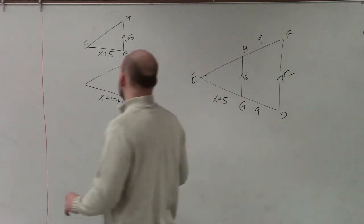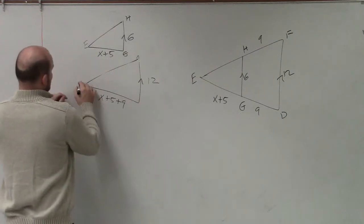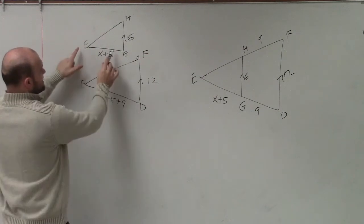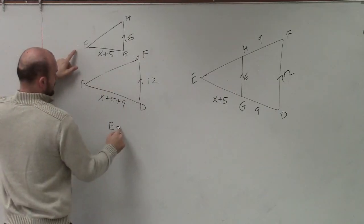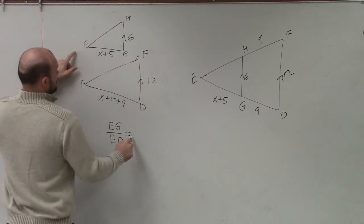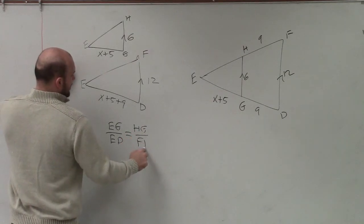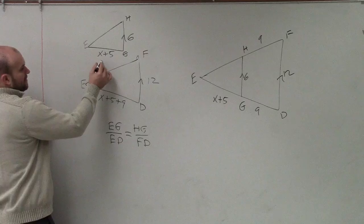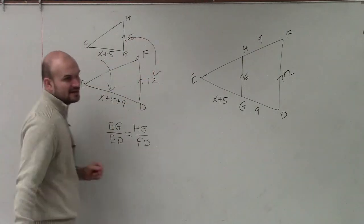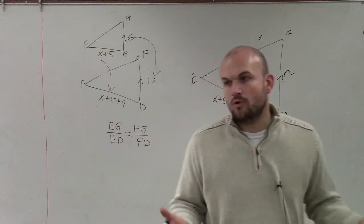So what I can say now is, let me label this — that'd be E, D, and F. So what I could say is EG is to ED as HG is to FD. This side is to that side, as this side is to that side. Their ratios are equal, or what we call proportionate.